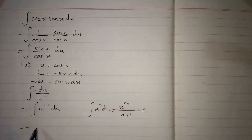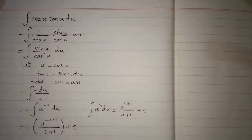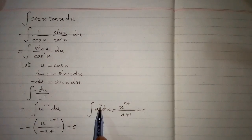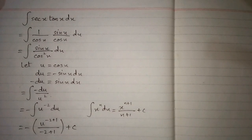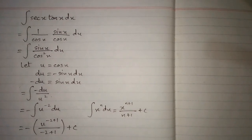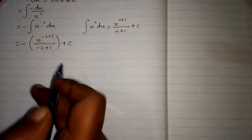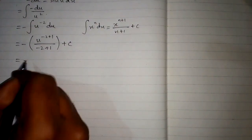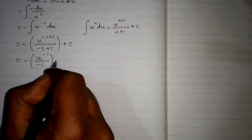Applying the power rule with n equal to minus 2, this becomes minus u to the power minus 2 plus 1 upon minus 2 plus 1 plus c, which simplifies to minus u to the power minus 1 upon minus 1 plus c.